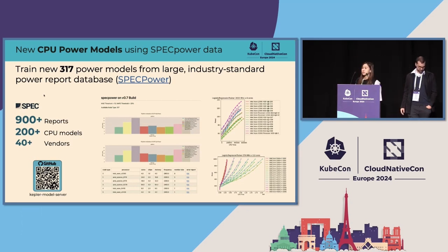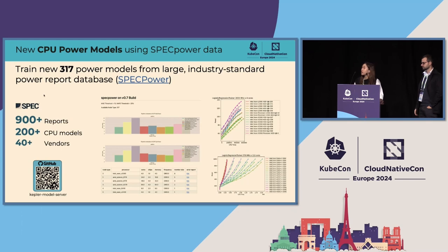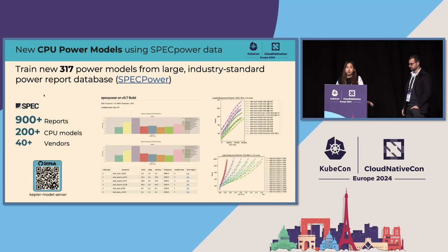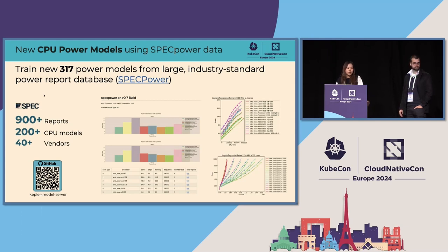In this quarter, we also have more than 300 CPU power models that have been trained using the SPECpower database. The SPECpower database is a large power database that contains more than 900 power reports, covering more than 200 CPU models from major industry vendors. We can use these models for cloud instances that have no access to power meters, or even cloud servers that don't have power meters themselves. We can use one of these power models that matches the server profile or specifications to estimate the power consumption of the workload.